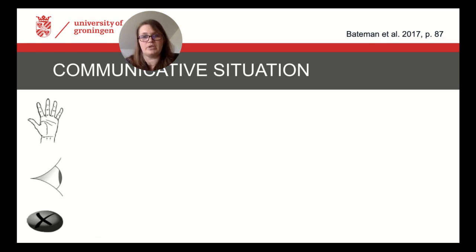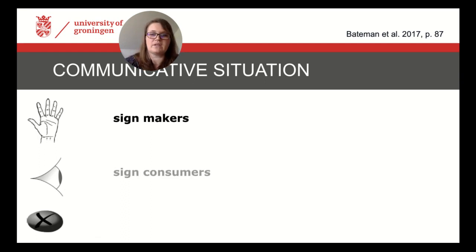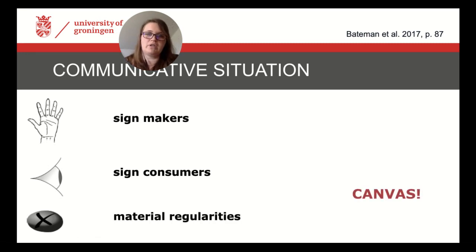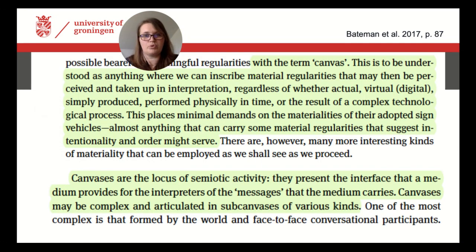For the definition of the communicative situation, we will look at the sign makers — the producers of and contributors to the multimodal artifact or performance — and the sign consumers, those who are receiving and interpreting the artifact. Most importantly, we will look at the materialities and material regularities: what we call from now on the canvas in which or on which the sign makers are working. Canvas here is a technical term for all things that may carry meaning — or as we say in the book, anything where we can inscribe material regularities that may then be perceived and taken up in interpretation.